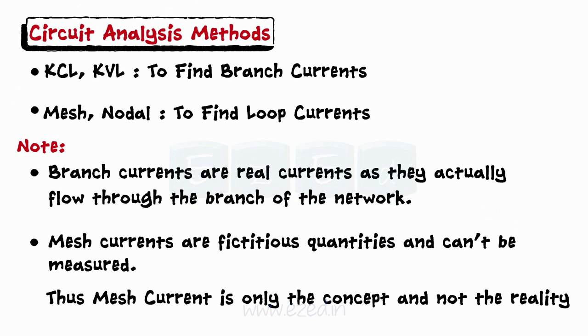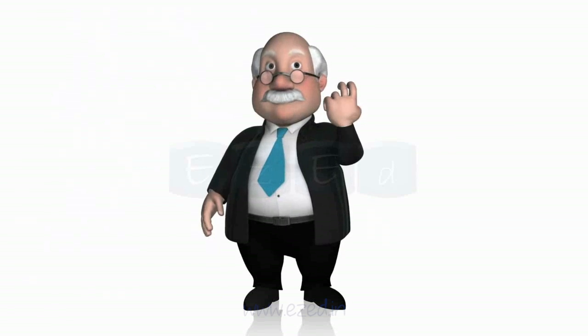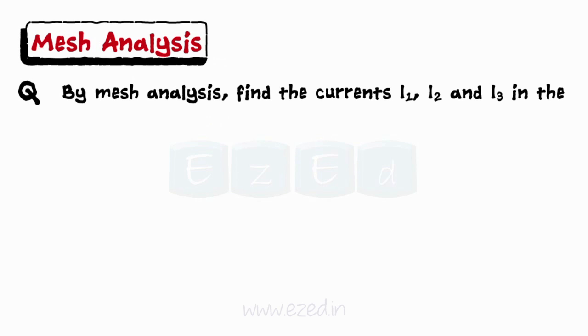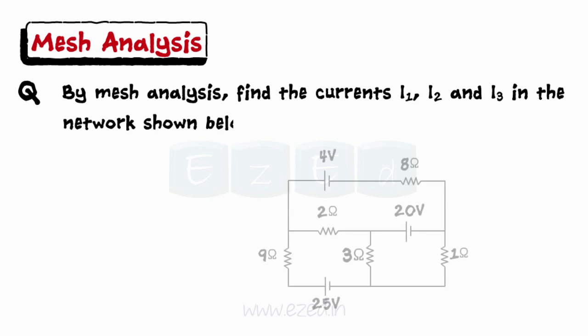Let's study the mesh method with the help of an example. By mesh analysis, find the currents I1, I2, and I3 in the network shown below.